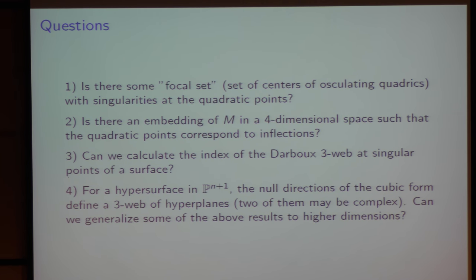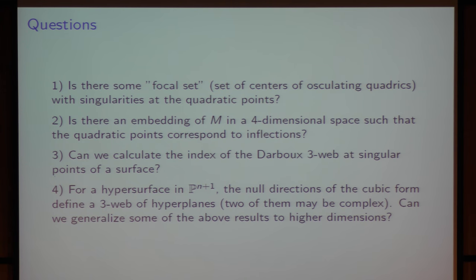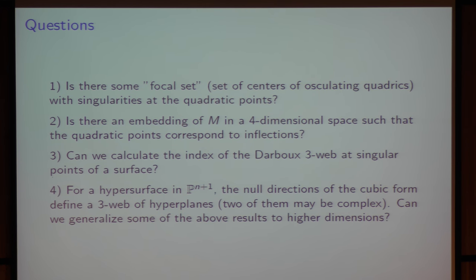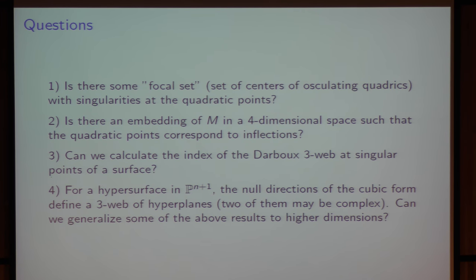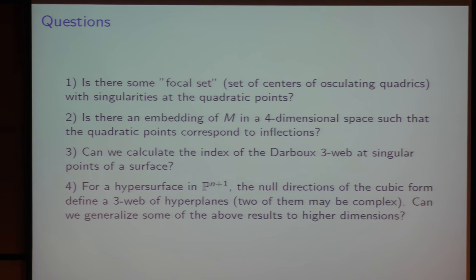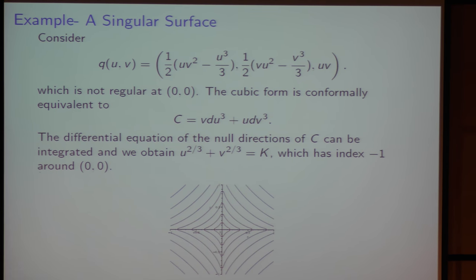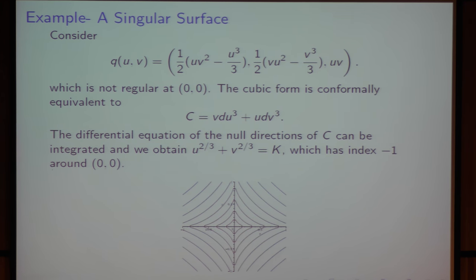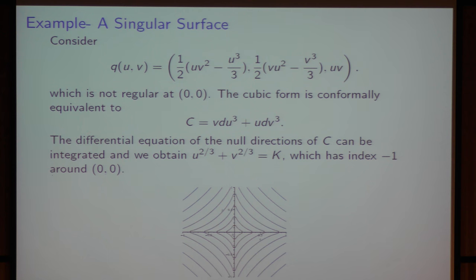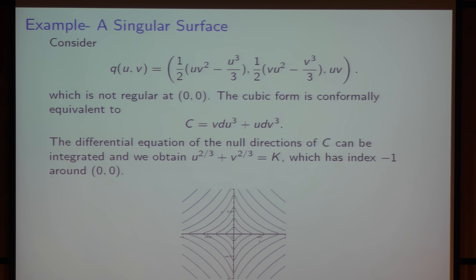Other questions concern higher-dimensional spaces: the null directions of the cubic form define a three-web of hyperplanes, and again two of these hyperplanes may be complex. Can we generalize these results to higher dimensions? Just to finish, I will show you a singular surface, singular at (0,0), but we can calculate the cubic form in a neighborhood of this point. It's a hyperbolic region, so we have just one null direction. We obtain this foliation by integrating these null directions, and it has index minus 1.